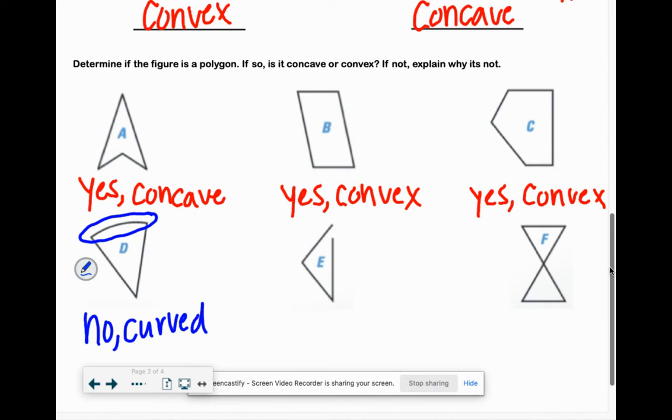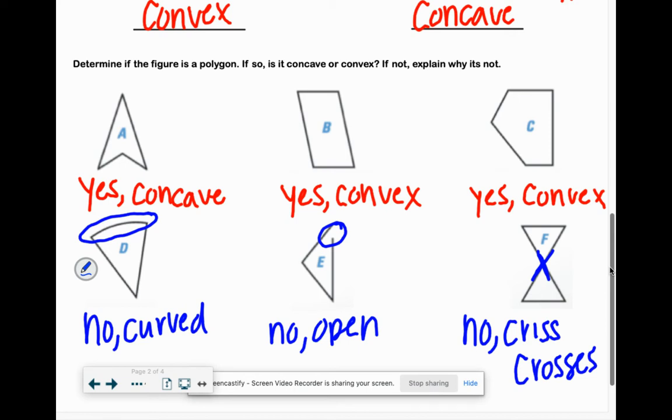What about E? Nope, why not? It's missing a chunk, it's open. And then F is probably the trickiest one. What do you guys think? I think it's yes. You think it's a 50-50 shot, right? It's all straight lines and just the middle is confusing. Yes, your lines are all straight. The only issue with this one though is our sides can't crisscross right there. It kind of needs to be like hollow in the middle, it all has to be open. So we're going to say no because it crisscrosses, our sides intersect.